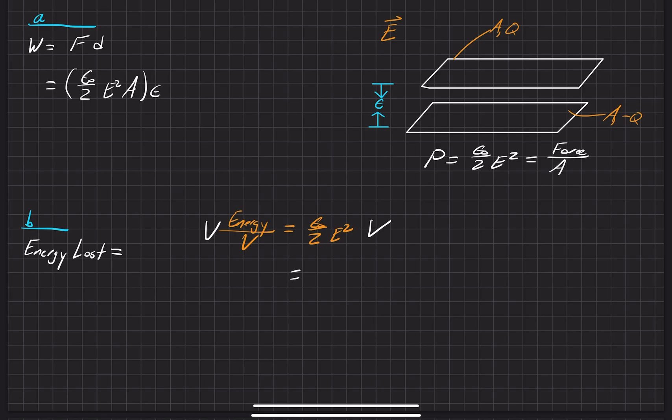Which is equal to epsilon naught over two E squared, and the volume that's within the system, so the volume that these two parallel plates make up, is epsilon times the area.